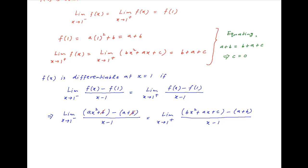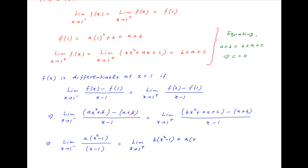On the left-hand side, b cancels in the numerator, and taking a as common, we get the limit as x tends to 1 from the negative side of a times (x squared minus 1) divided by (x minus 1). On the right-hand side, taking b common among the first and last terms gives b times (x squared minus 1), taking a common gives a times (x minus 1), plus c, all divided by (x minus 1). Since c equals 0, and x minus 1 cancels on both sides.